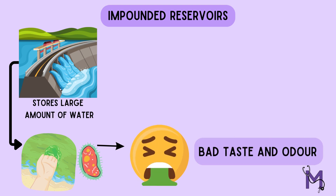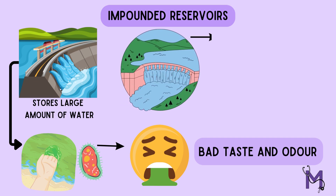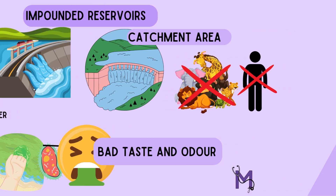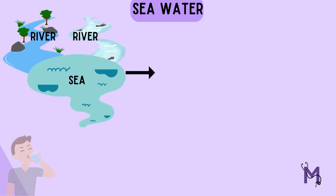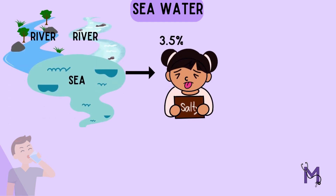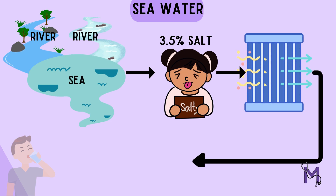An important point to remember here is that the area that drains into the reservoir is known as the catchment area. It is important to keep this catchment area free from human or animal intrusion. Lastly, we have seawater. When visiting beaches, you must have noticed the water is salty. The percentage of salts in seawater is 3.5% of salts in solution. Seawater is a major source because all surface water ultimately drains into the sea. This water can be used for consumption only after desalting and demineralizing the water.